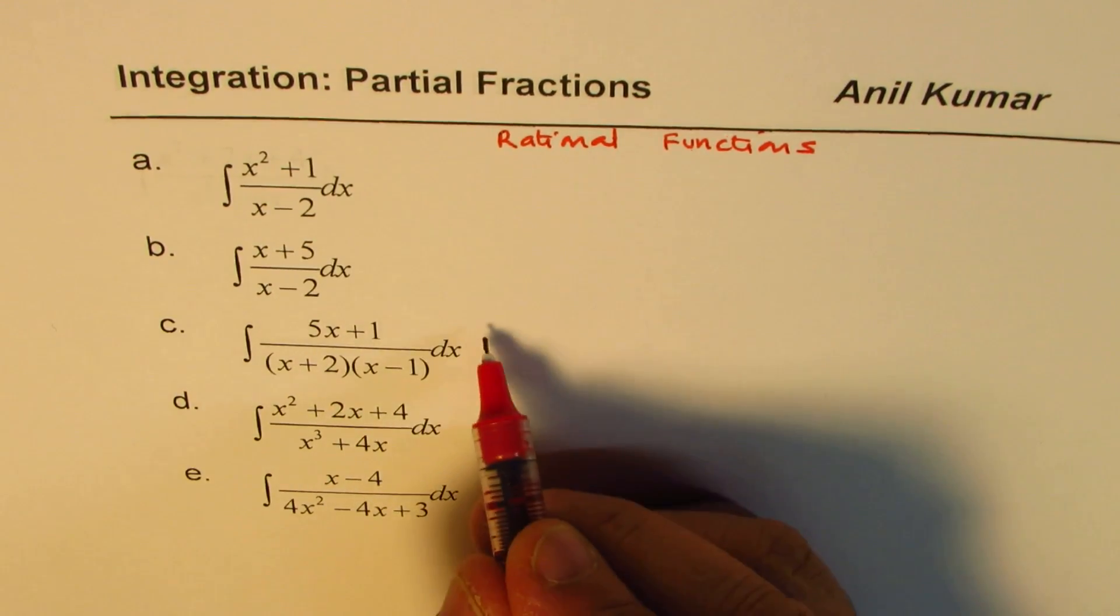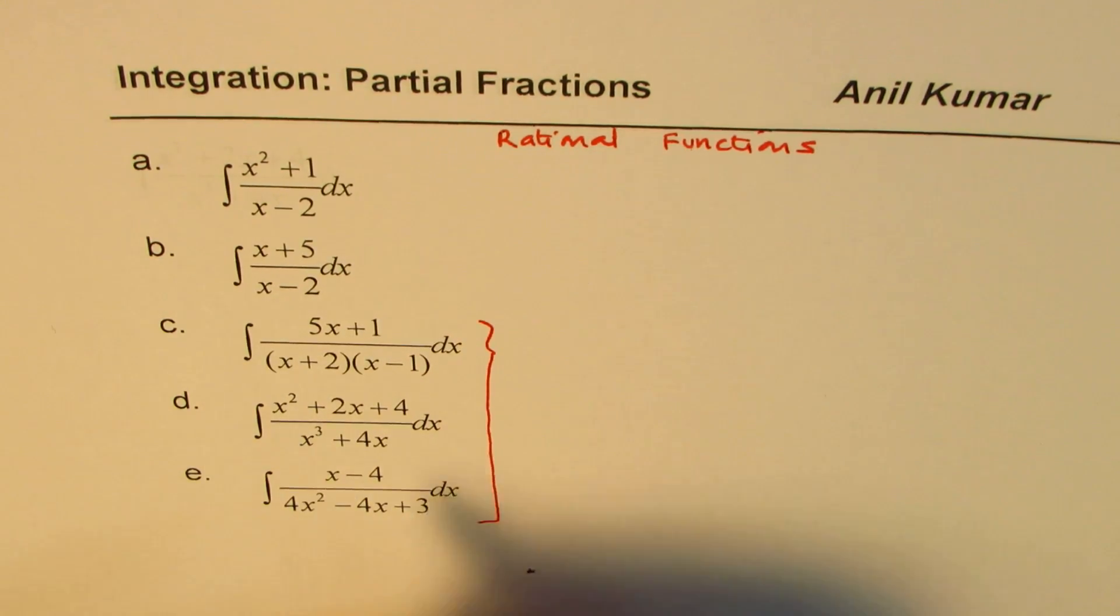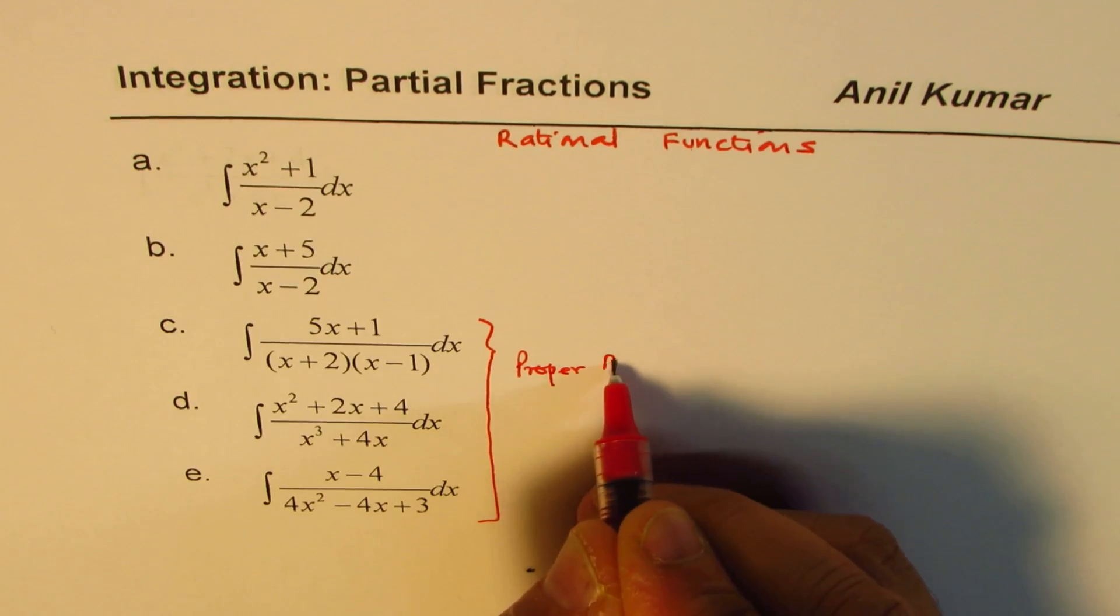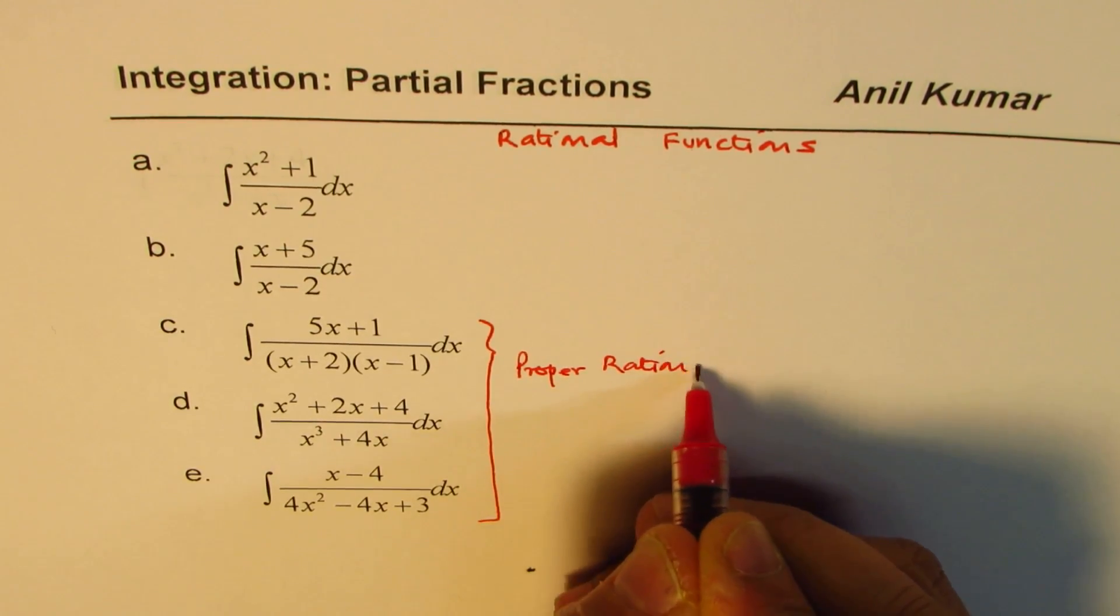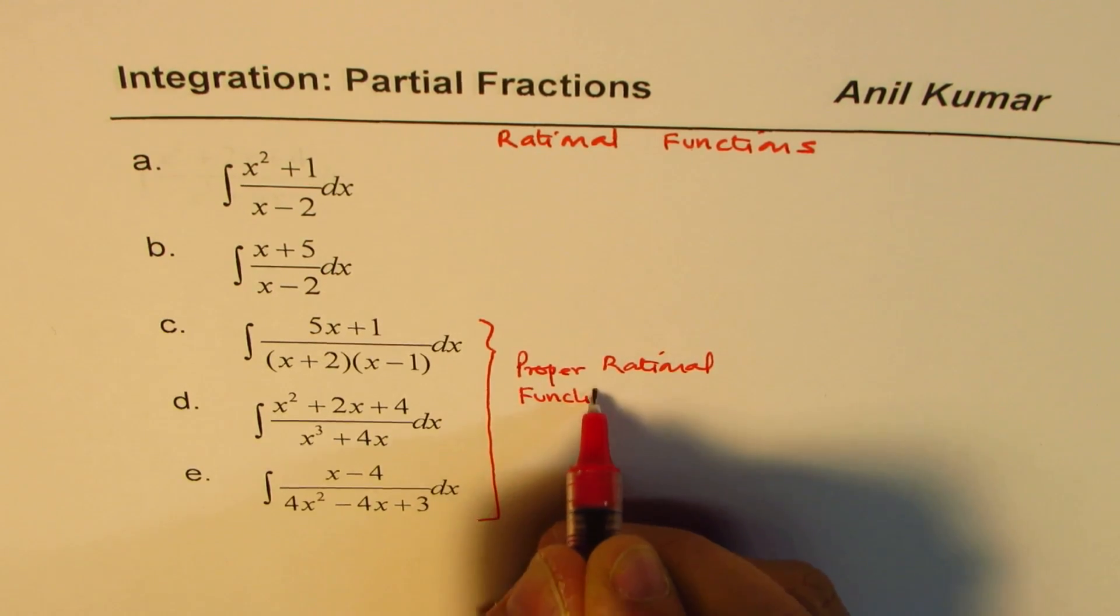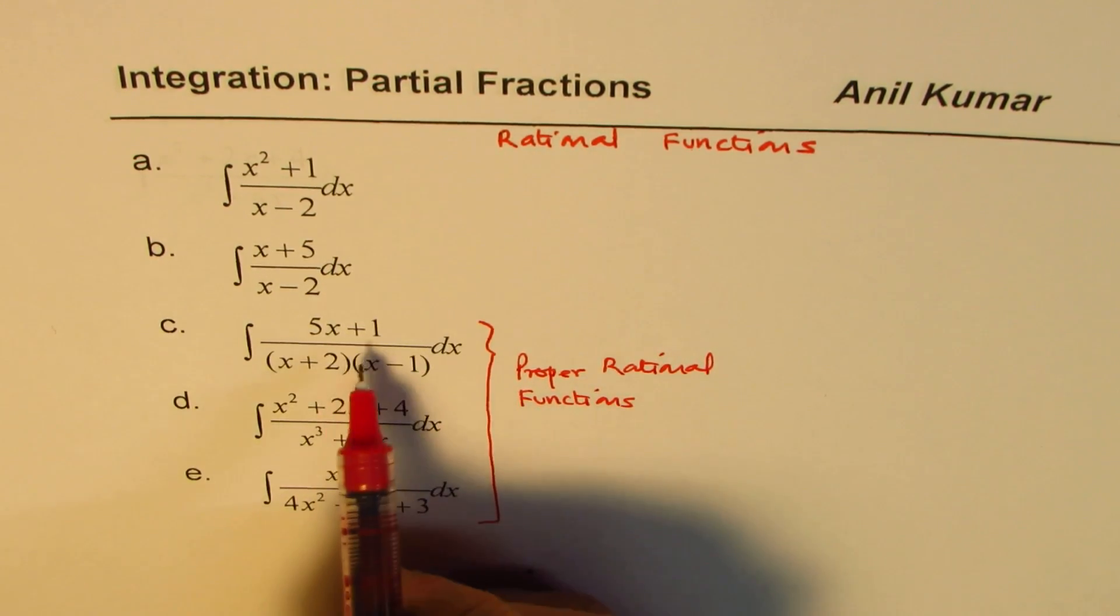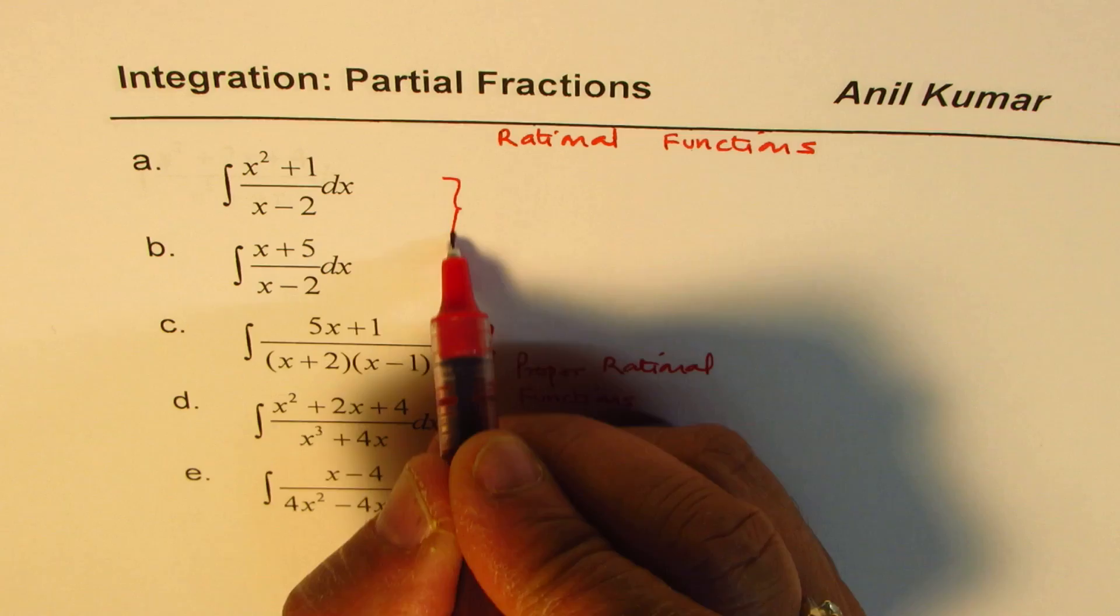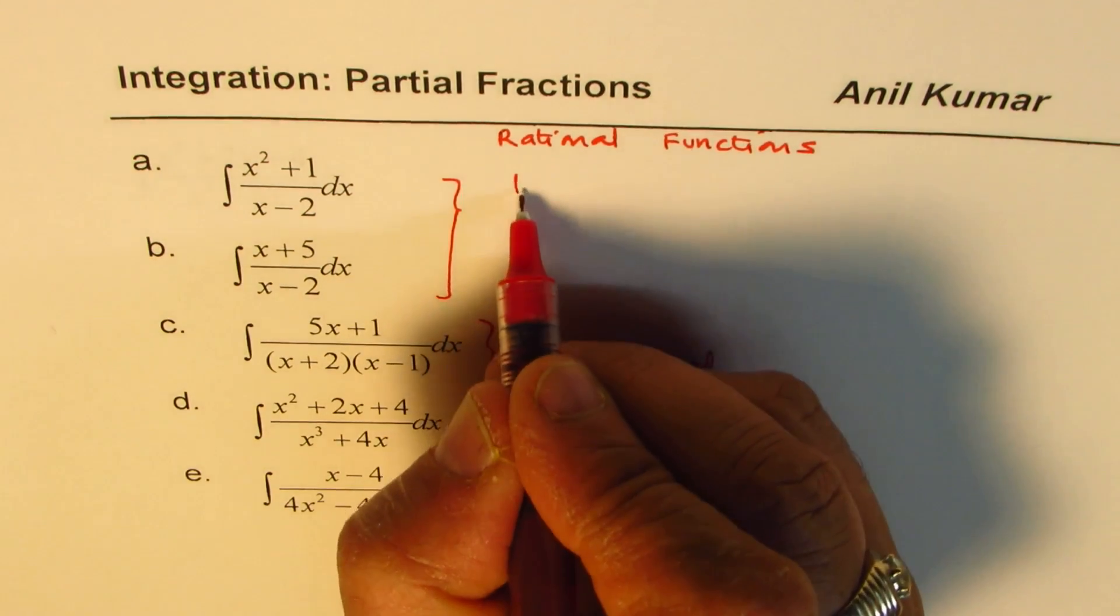So what we call these three are proper rational functions. Since the degree of numerator is lower than denominator, and these two types are called improper.